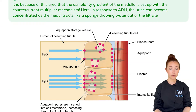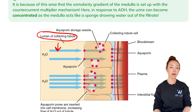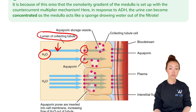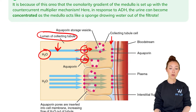The filtrate — the lumen of the collecting duct — is here. The lumen just means this opening. So the filtrate is going through here, and water from the filtrate is being reabsorbed. The aquaporins are produced and inserted on the apical side as well as on the basolateral side of these cells, to enable water to pass through by osmosis.